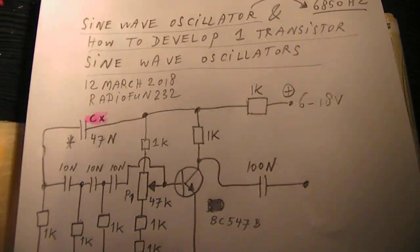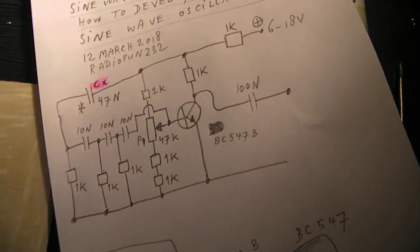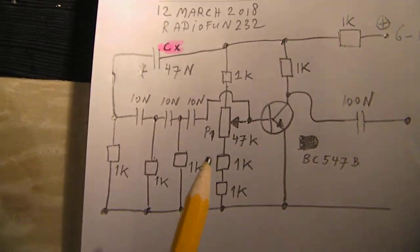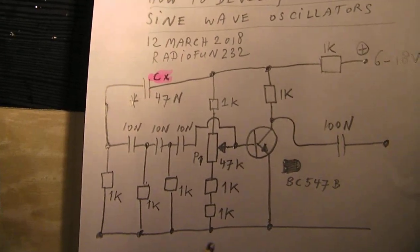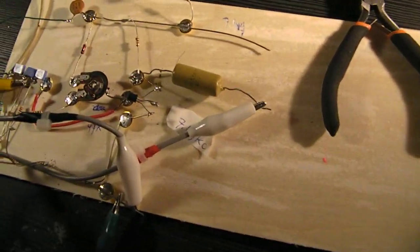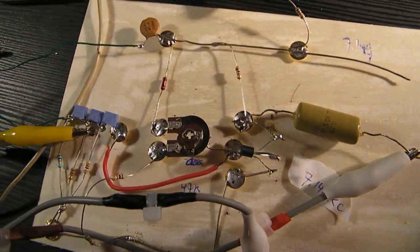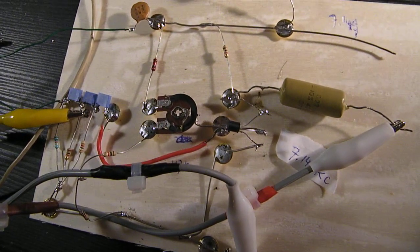All these sine wave oscillators consist of a network that changes the phase, but anyway take that for granted. This is the circuit and here it is on the breadboard, very simple. I made quite a few of them in the past.